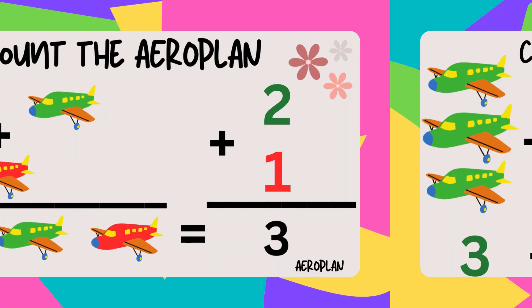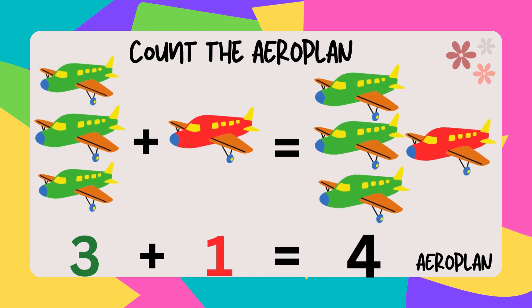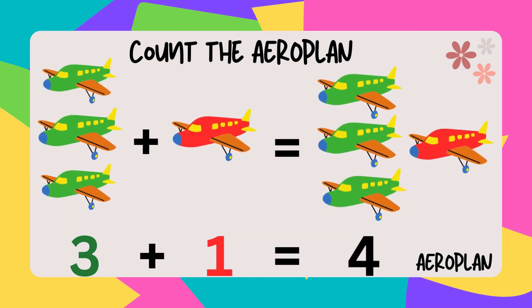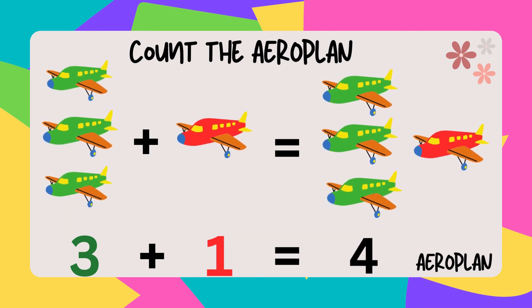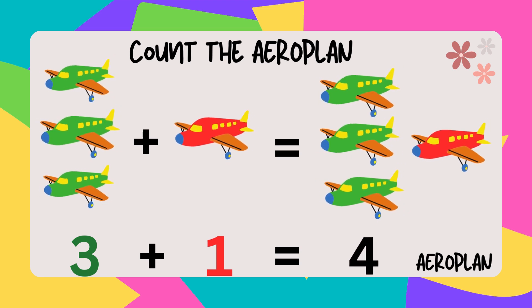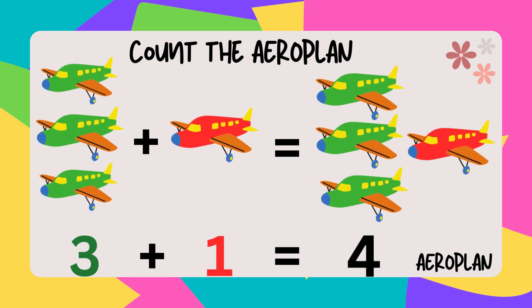Three green aeroplanes plus one red aeroplane. The sum of aeroplanes is four.